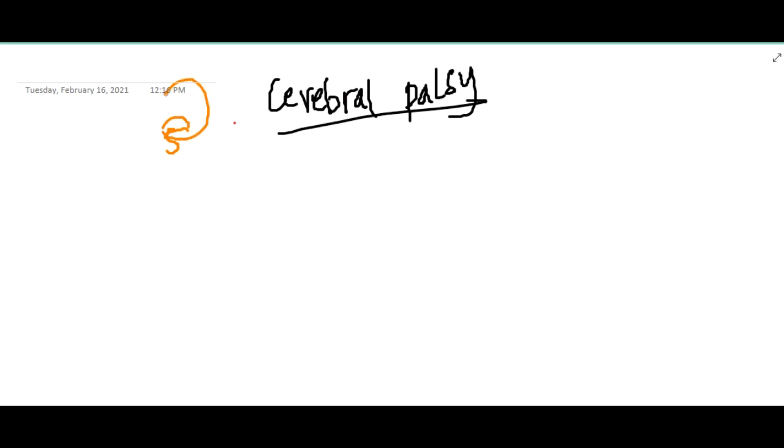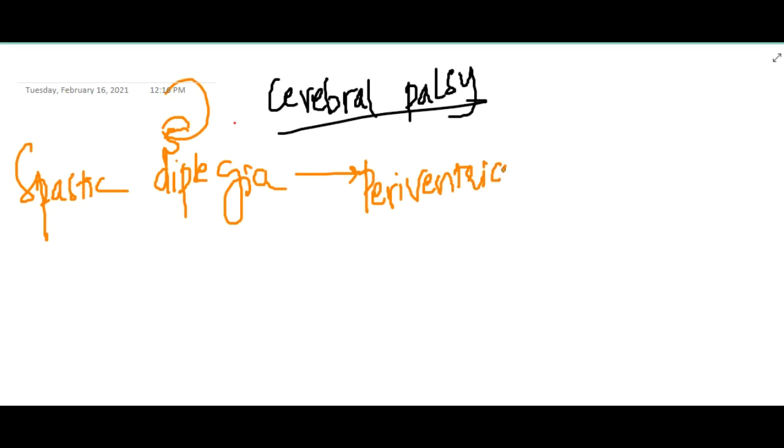There are four to five different types of cerebral palsy present. First, we have spastic diplegia. This spastic diplegia is seen in the periventricular area of the brain and will cause periventricular leukomalacia or periventricular hemorrhagic infarct.